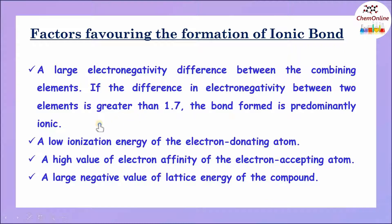There are also other factors which influence the formation of ionic bond. The electron donating atom must have a low ionization energy. Whereas, the electron accepting atom should have a high value of electron affinity — that is, the tendency to attract the shared electron towards itself. And finally, a large negative value of lattice energy of the compound, which is the energy released when one mole of the ionic compound is formed from its constituent gaseous ions, will favor the formation of the ionic bond.